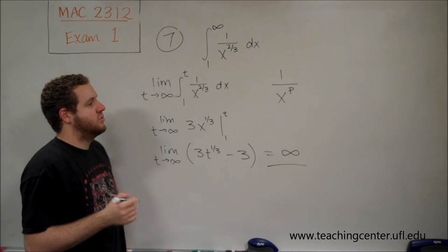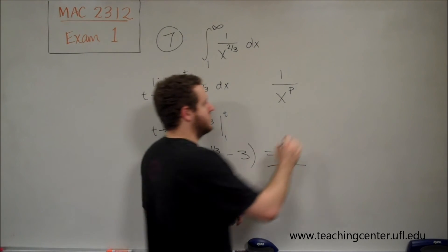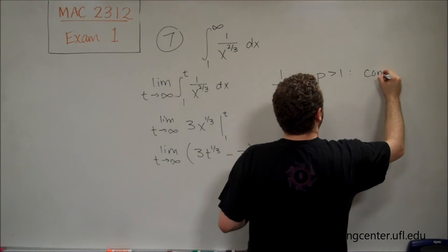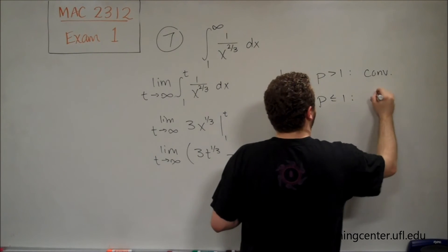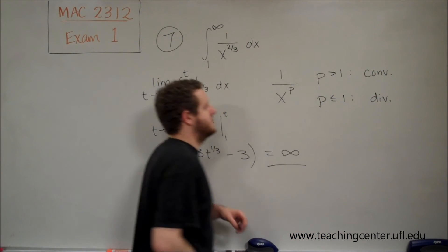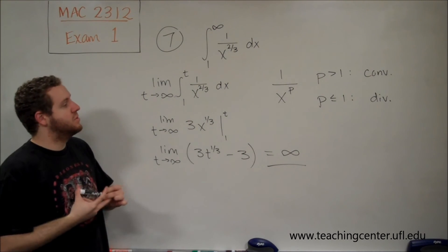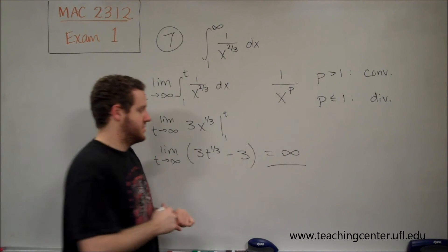As long as p is greater than 1, you have a convergent series. So p greater than 1, you get convergent. If p is less than or equal to 1, you have divergent. Since we had 2/3 less than or equal to 1, we know that's clearly divergent.